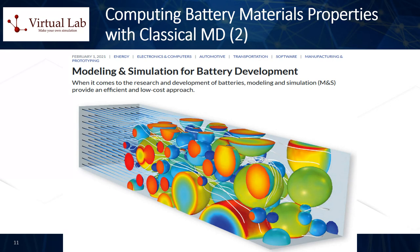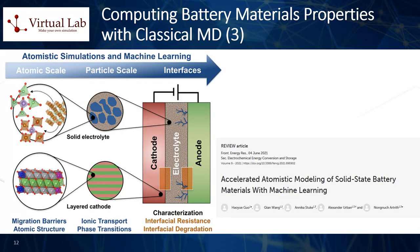Second, studying phase transitions: MD can be used to simulate heating, cooling, and pressure changes, allowing the study of phase transitions in materials. This is particularly important in battery applications, where phase transitions can lead to changes in material volume, which can in turn lead to mechanical stresses and potential battery failure. Third, interface and surface phenomena: interactions at the interfaces between different materials — like between the electrolyte and electrode in a battery — are crucial for overall performance. MD simulations can provide insights into interfacial phenomena such as ion intercalation and deintercalation processes at electrodes, or solvent decomposition at the electrolyte-electrode interface.